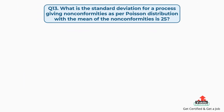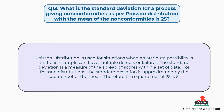Question number thirteen: What is the standard deviation for a process giving non-conformities as per Poisson distribution with a mean of non-conformities of twenty-five? Poisson distribution is used for situations when an attribute possibility is that each sample can have multiple defects or failures. The standard deviation is a measure of the spread of scores within a set of data. For Poisson distributions, the standard deviation is approximated by the square root of the mean. Therefore, the square root of twenty-five is five.